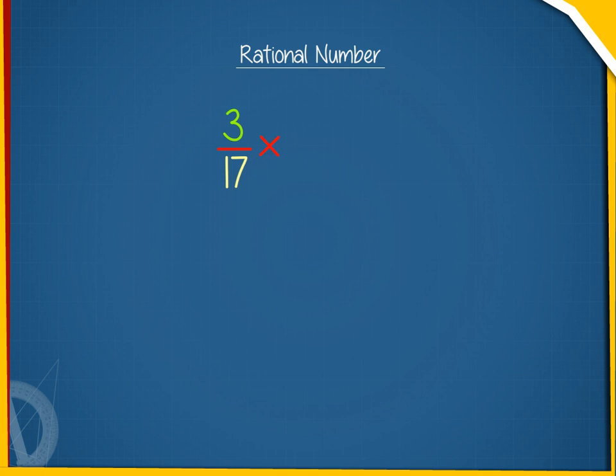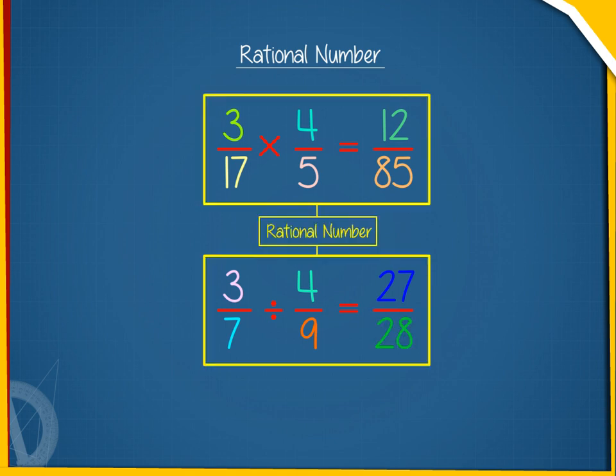3 upon 17 multiply by 4 upon 5 equals 12 upon 85, and 3 upon 7 divided by 4 upon 9 equals 27 by 28 are rational numbers.